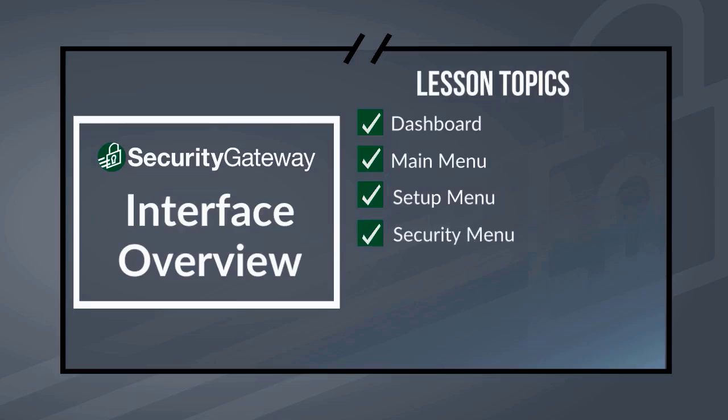We'll talk about the Security menu, where you'll find security and spam filter settings, data leak prevention rules, and R-mail encryption settings. Under the Messages List and Queues section, you'll find a listing of all messages, plus user and administrative quarantines, messages that are queued for delivery, and the bad messages queue.